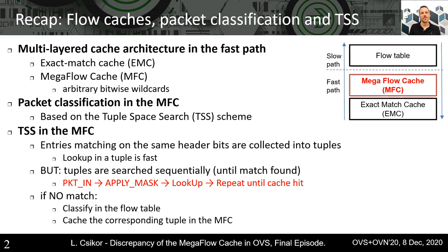So in a nutshell, a packet comes in, we apply a mask, lookup in a corresponding tuple, and if the header is found we stop and carry out the associated actions — say, forward or drop — otherwise take the next mask and continue the lookup process. If there is no match at all, a packet will be classified in the slow path, and the corresponding tuple will be spawned in the MFC for future packets.